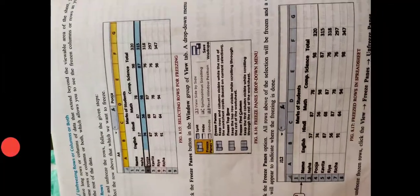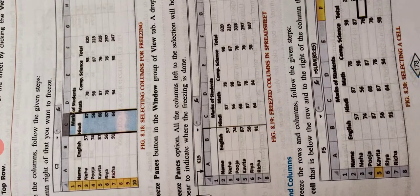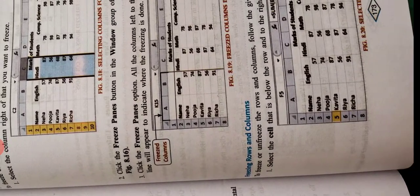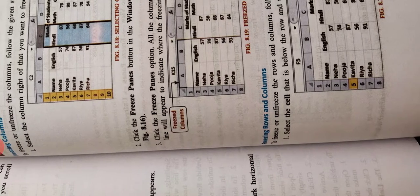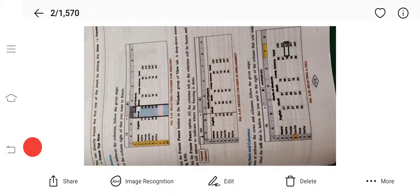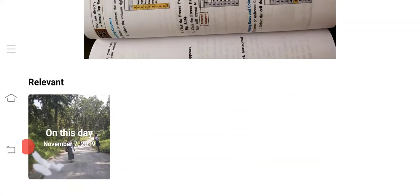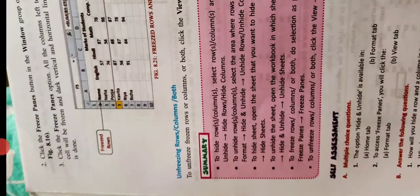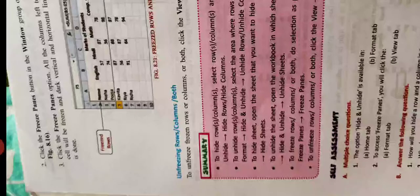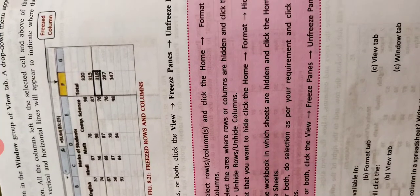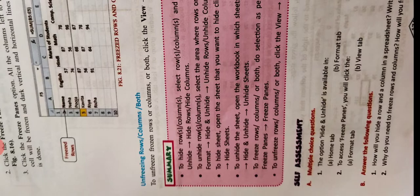So here are some steps for freezing rows and columns and to unfreeze. See, unfreeze rows and column. To unfreeze, click on View, Freeze Panes, then Unfreeze. When you freeze pane, automatically unfreeze pane will also appear, then you can easily unfreeze it.